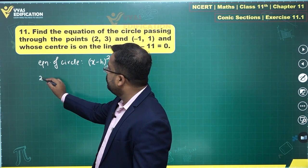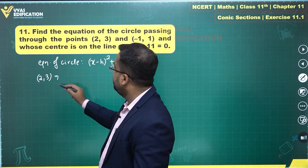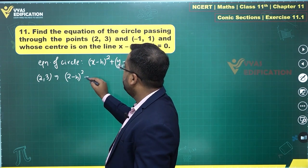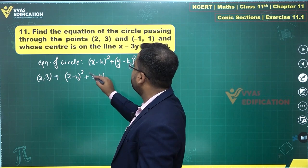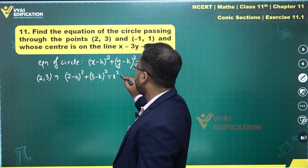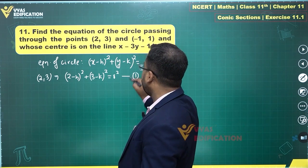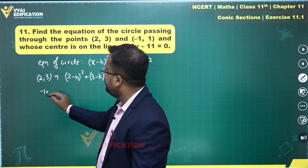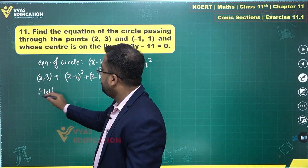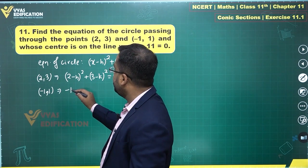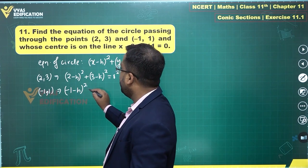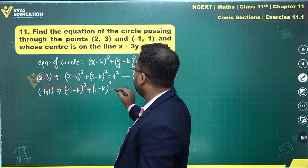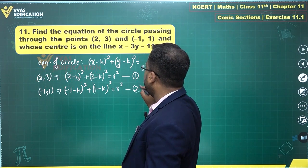If it passes through 2 comma 3, this tells me that 2 minus h squared plus 3 minus k squared will be equal to r squared. This is equation number 1. If it passes through minus 1 comma 1, it also tells me that minus 1 minus h squared plus 1 minus k squared will be equal to r squared. This is equation number 2.